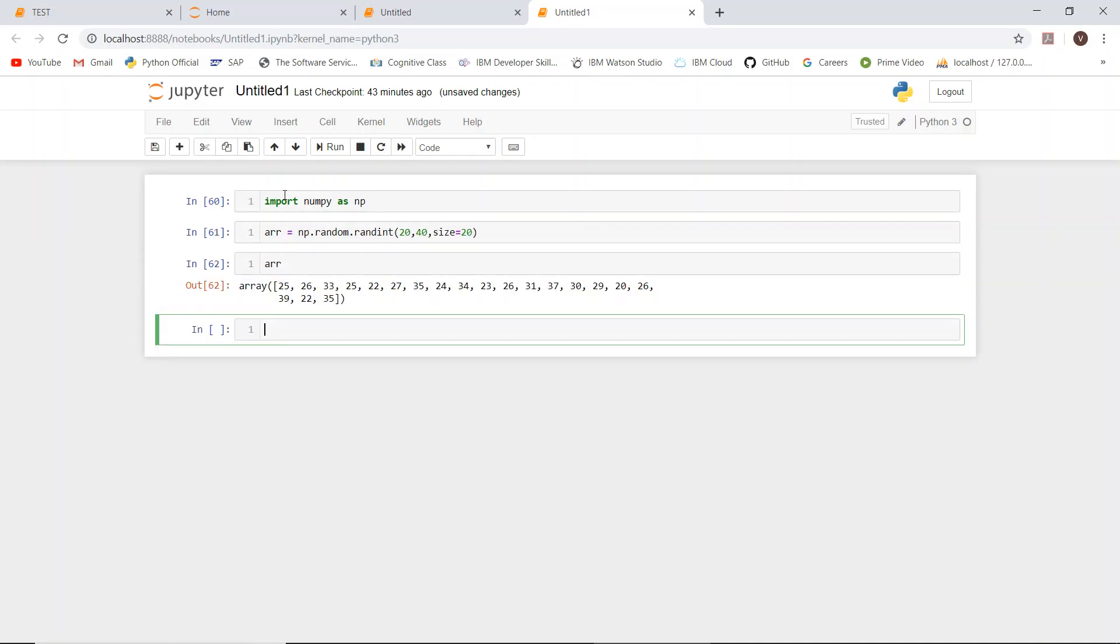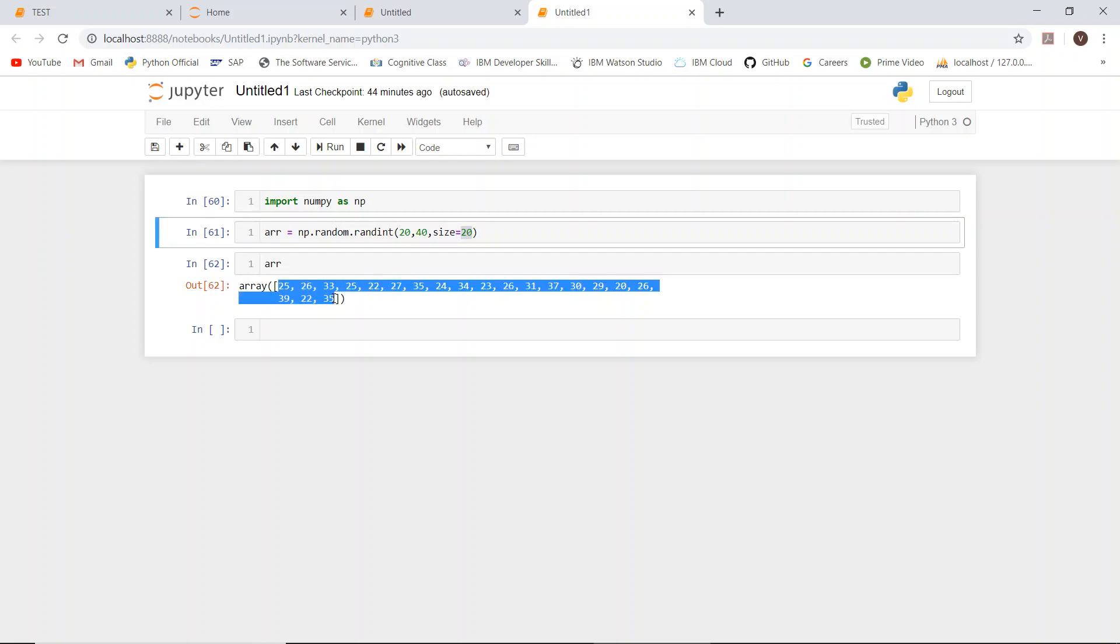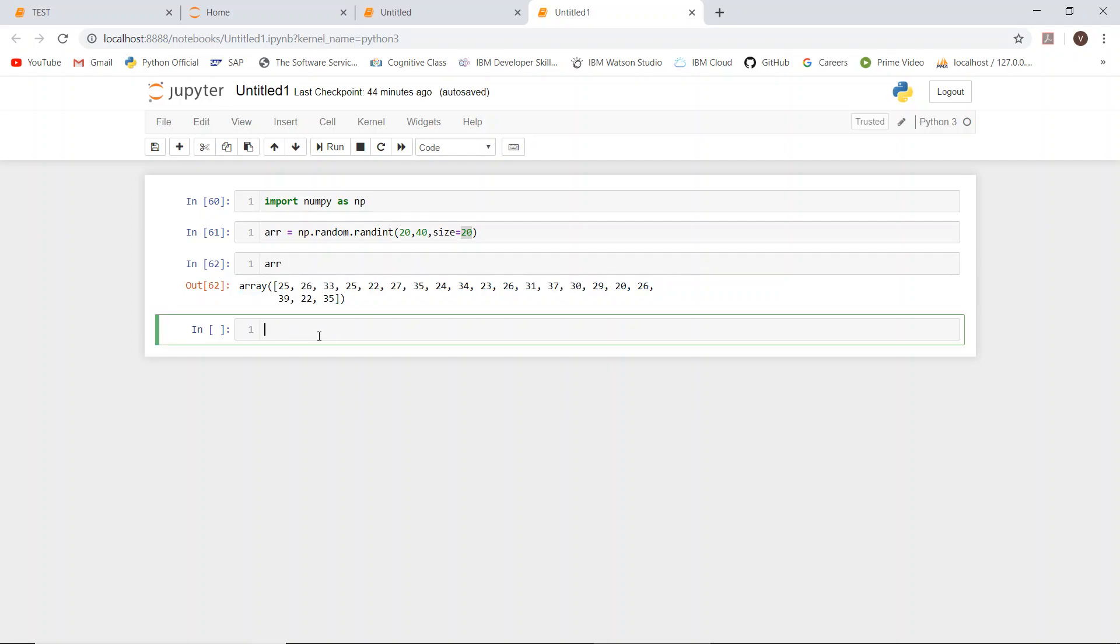Let's see the contents. The integers were generated from 20 to 40 - 20 numbers in the range of 20 to 40. Now we can use the unique method to find the unique